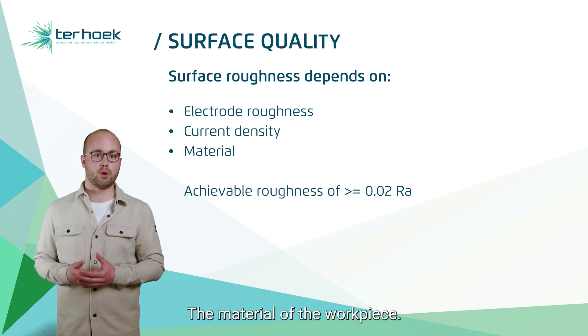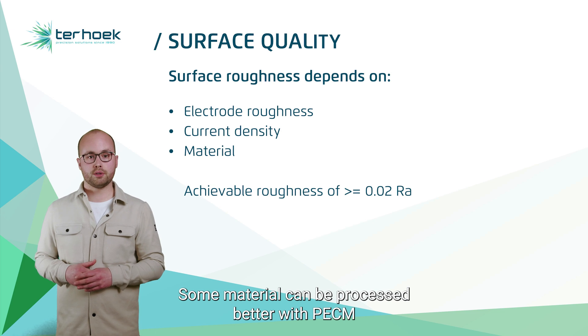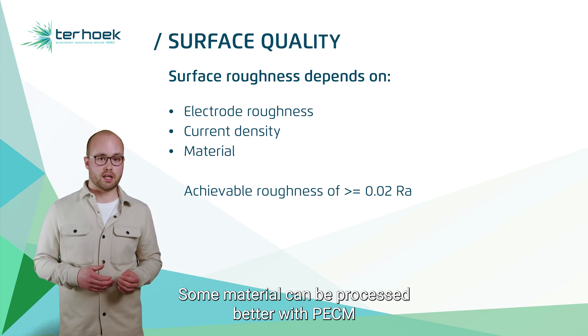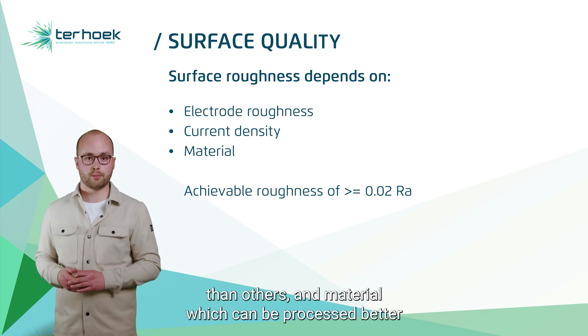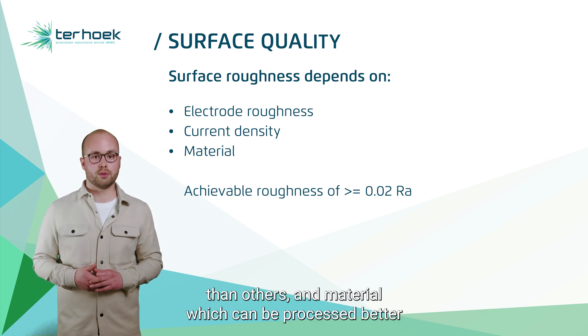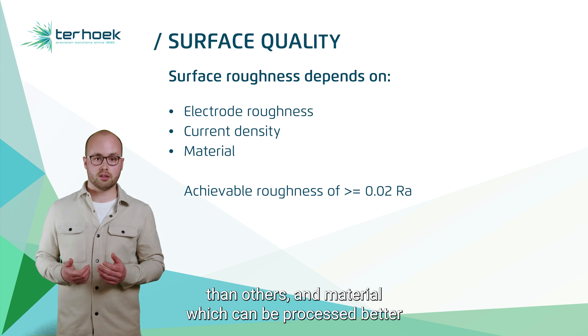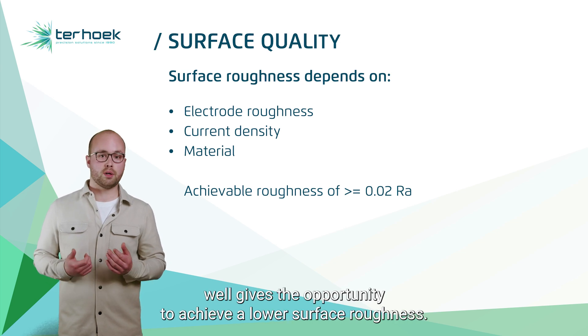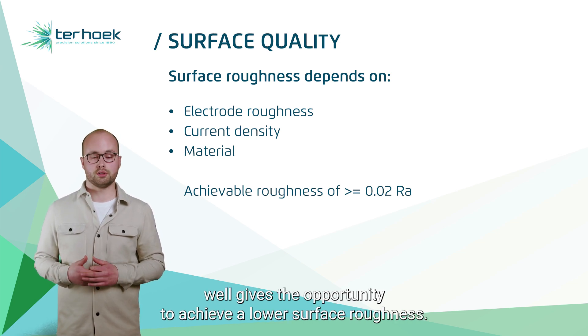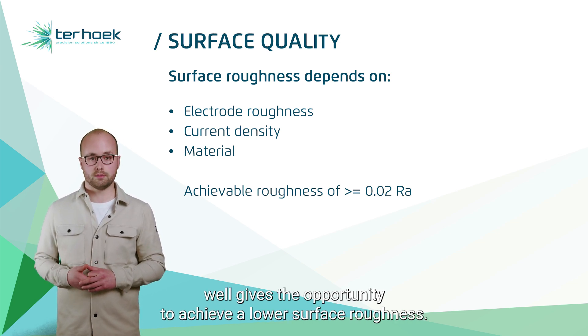The material of the workpiece is also a key parameter. Some materials can be processed better with PECM than others. A material which can be processed better will give the opportunity to achieve a lower surface roughness.